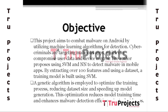Objective. This project aims to address the issue of malware on the Android platform by utilizing machine learning algorithms for detection — specifically Support Vector Machine and Neural Networks — to detect malware in mobile apps. By extracting features from the apps using a dataset, a training model is built using SVM, also aiming to use the genetic algorithm to select important features and remove unimportant ones, reducing the dataset size, speeding up the model, and optimizing the training process.